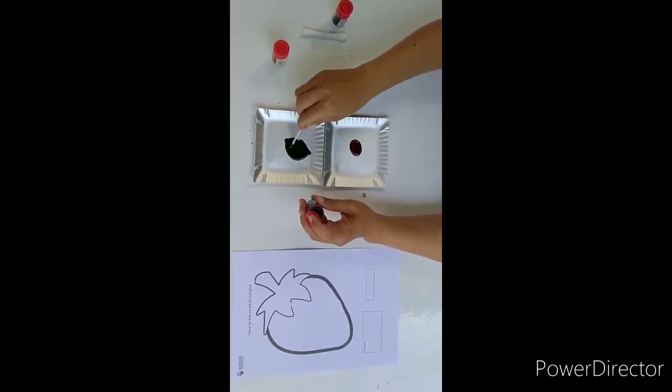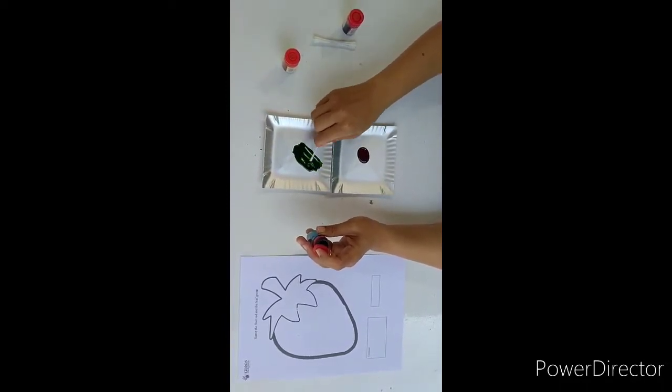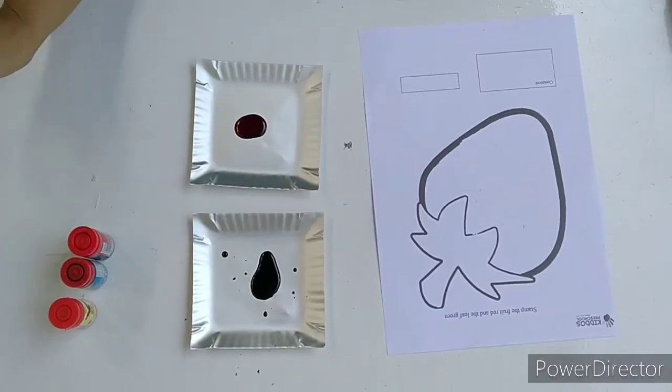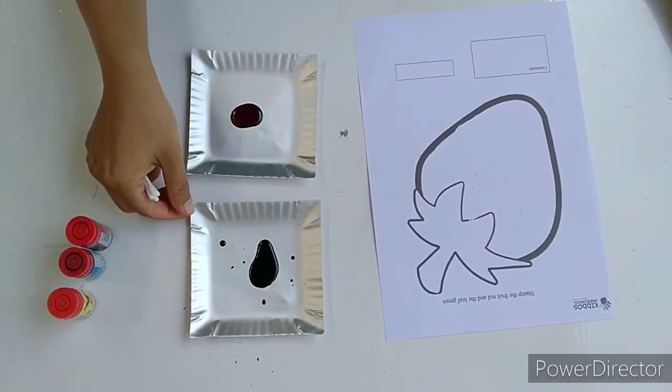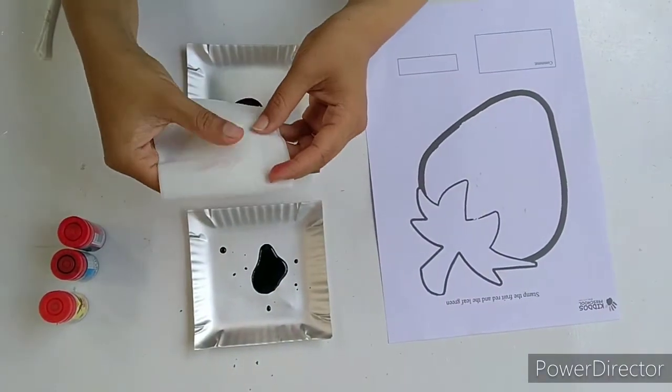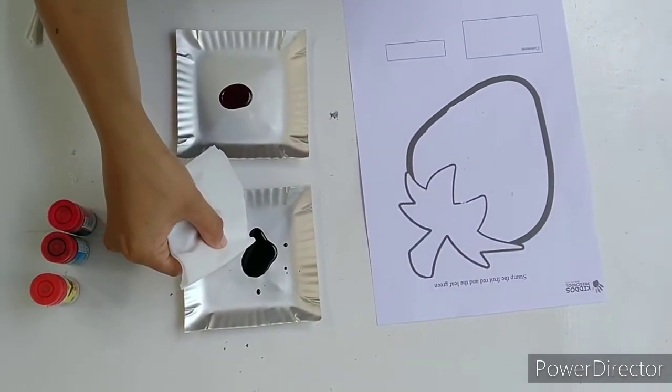So, this is going to turn into green. Okay. So, tadi kita sudah campur warna kuning sama warna biru, dan di sini sudah kita punya warna hijau. Jadi, sekarang misalnya sudah bawa tisu. Kita cek dulu apakah ini sudah benar-benar hijau.